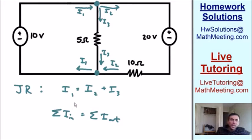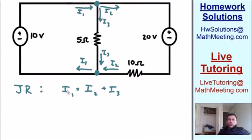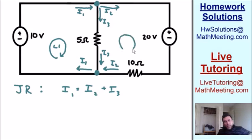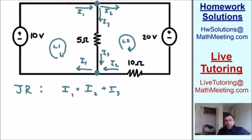Now let's write equations using the Loop Rule, abbreviated LR, which states that the sum of all the voltages around a loop is equal to zero. Notice we have two loops: loop one on the left-hand side and loop two on the right-hand side. There's also a third loop around the entire circuit, but we don't need it. It doesn't matter if you go clockwise or counterclockwise — as long as you keep your signs correct. I chose clockwise.